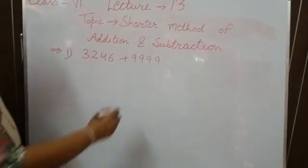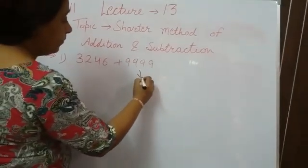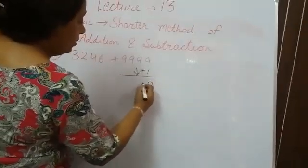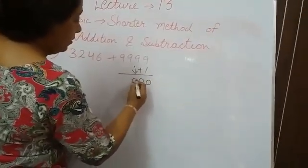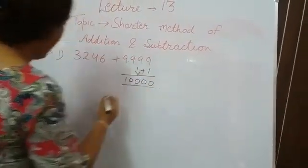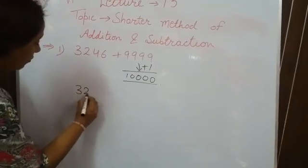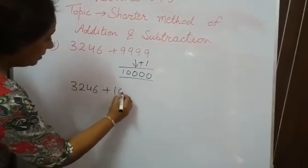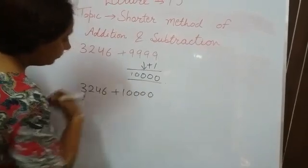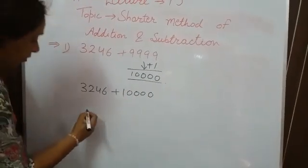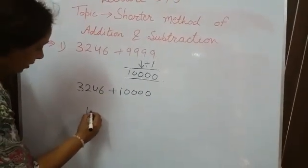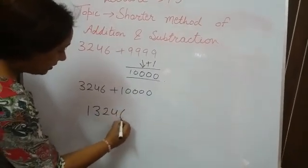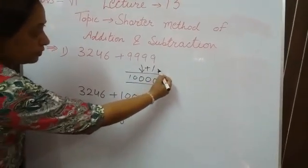In the first step, plus 1, you got 10,000. Now add 3246 plus 10,000, and you simply get 13,246.